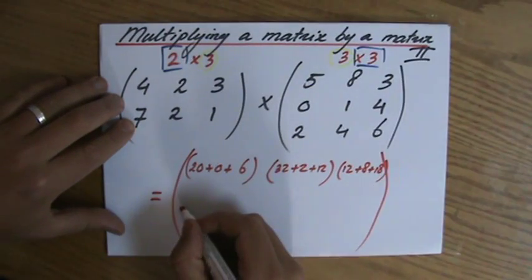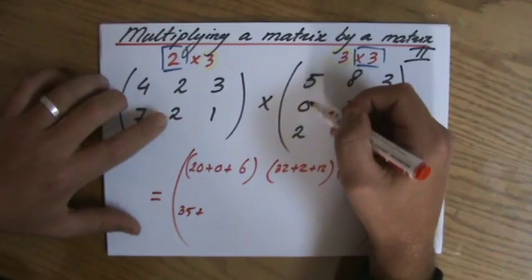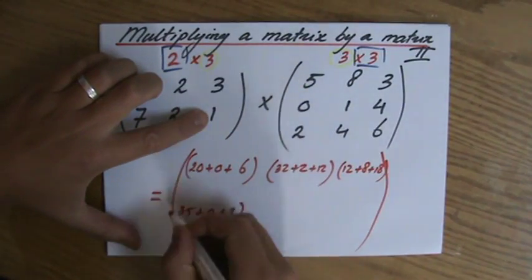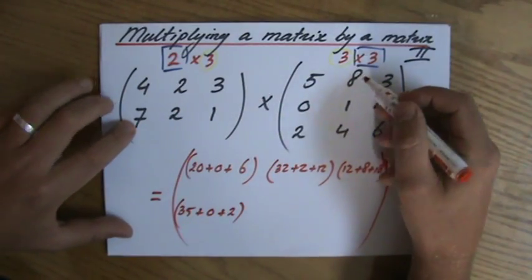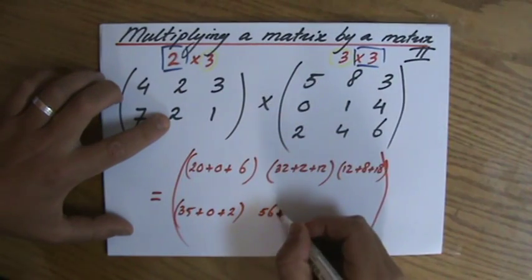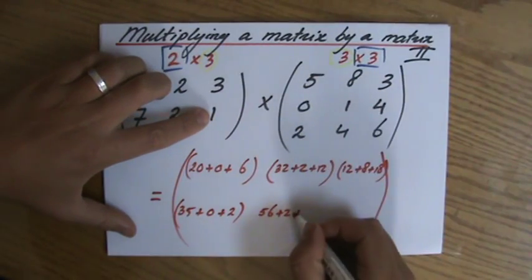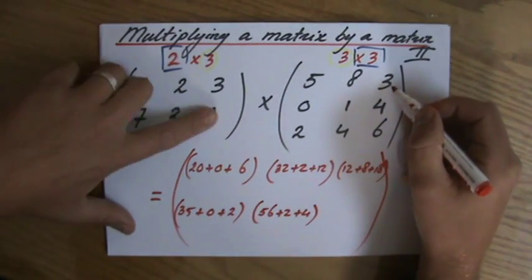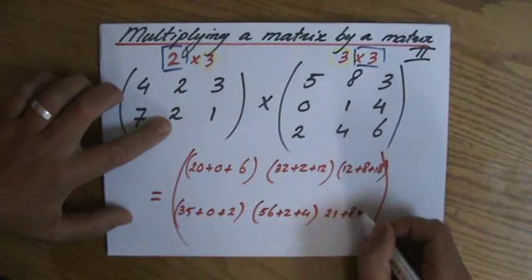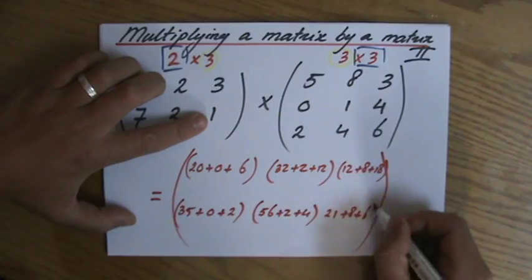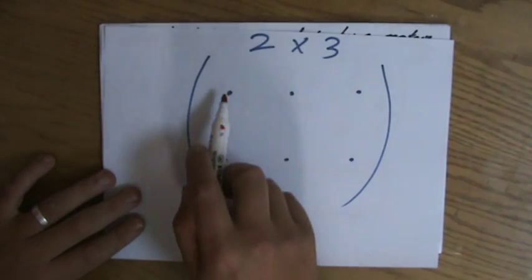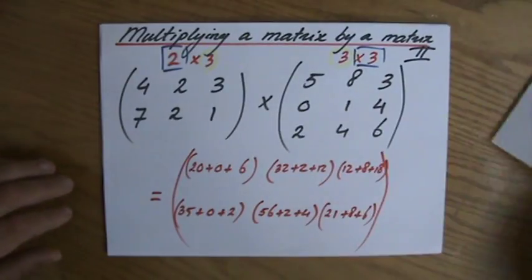So 7×5, 35, plus 2×0, which is 0, plus 1×2, which is 2. And we go to the next column. 7×8, which is 56, plus 2×1, which is 2, plus 1×4, which is 4. And finally, back here, 7×3, 21, plus 2×4, which is 8, plus 1×6. So I have 1, 2, 3, 4, 5, 6 pieces of information. And as I already said to myself, that's what I'm looking for, a 2×3 matrix, because the outer numbers are going to be the order of my new matrix.